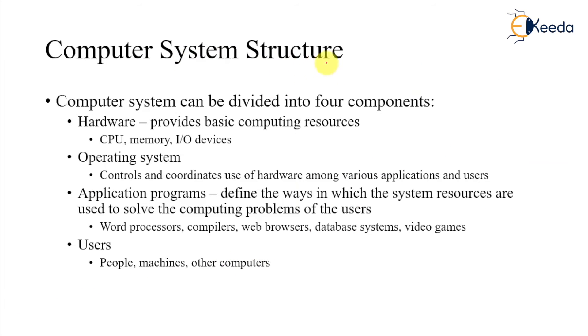Now the computer system is divided into four different components. There is hardware which provides basic computing resource. This is a very good term: it provides computing resource. Then you have operating system. We are about to introduce this operating system and what it does is it controls and coordinates use of hardware among various applications and users. Third component is application program.